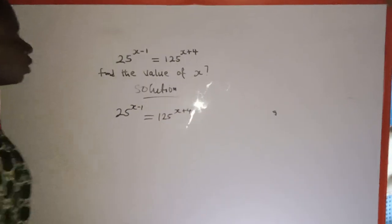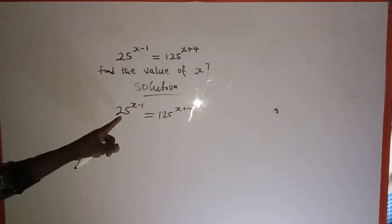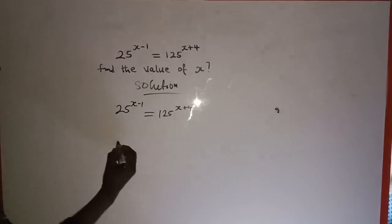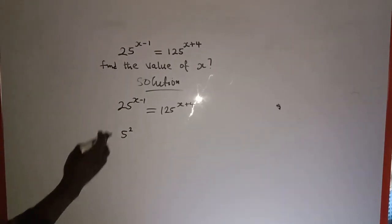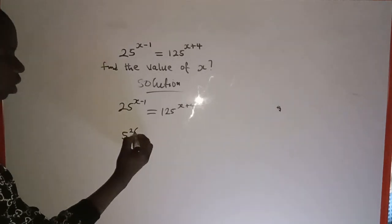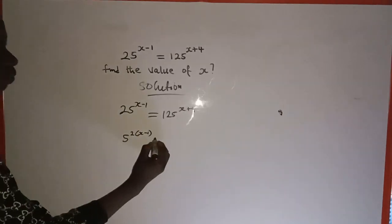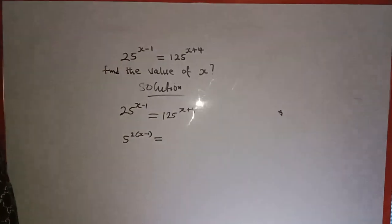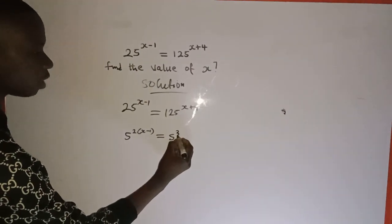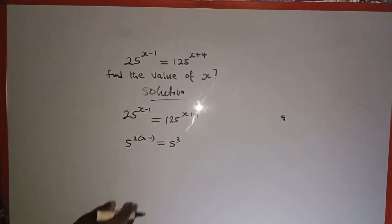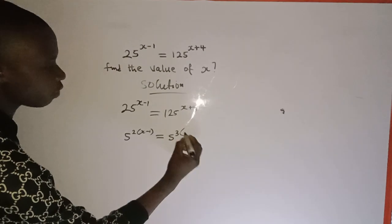Before we can solve it, we have to make the bases equal. To make the bases equal, this 25 can also be written as 5 to the power of 2 — because 5 times 5 equals 25 — raised to the power of s minus one. And 125 can be written as 5 to the power of 3, because 5 times 5 is 25, and 25 times 5 is 125, raised to the power of s plus four.